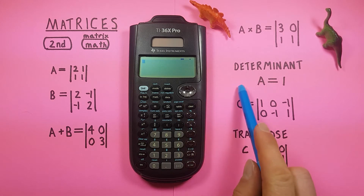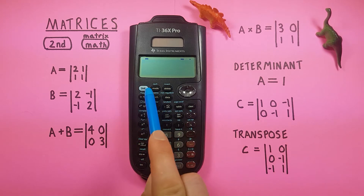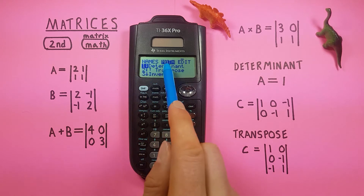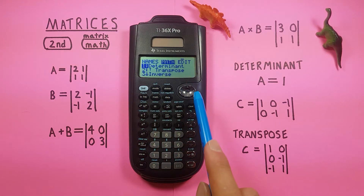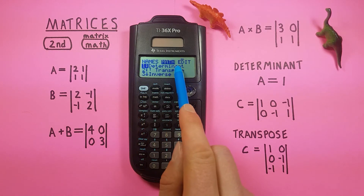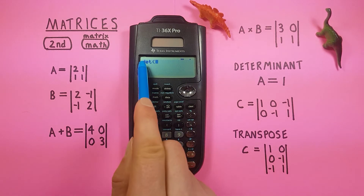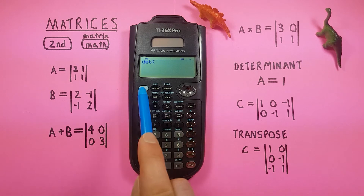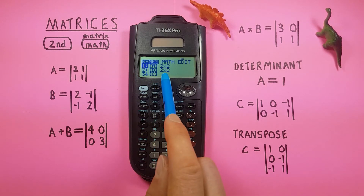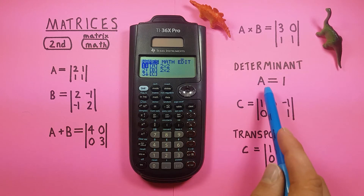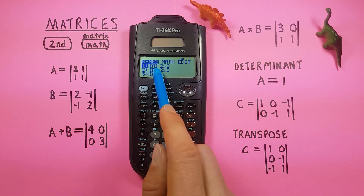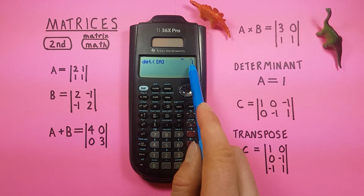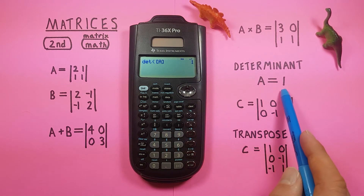We can also find the determinant of a matrix. Go into the matrix menu and over to the math menu. Number one is determinant — highlight it and press enter to get the det function. Then go back to the matrix menu and select matrix A. Press enter and we see the determinant of matrix A is one.